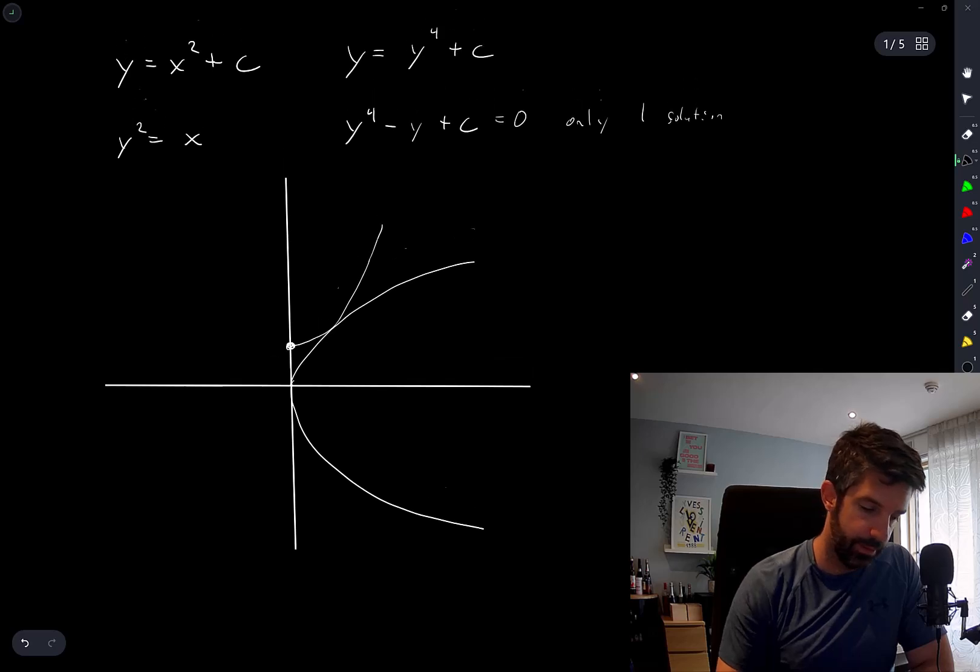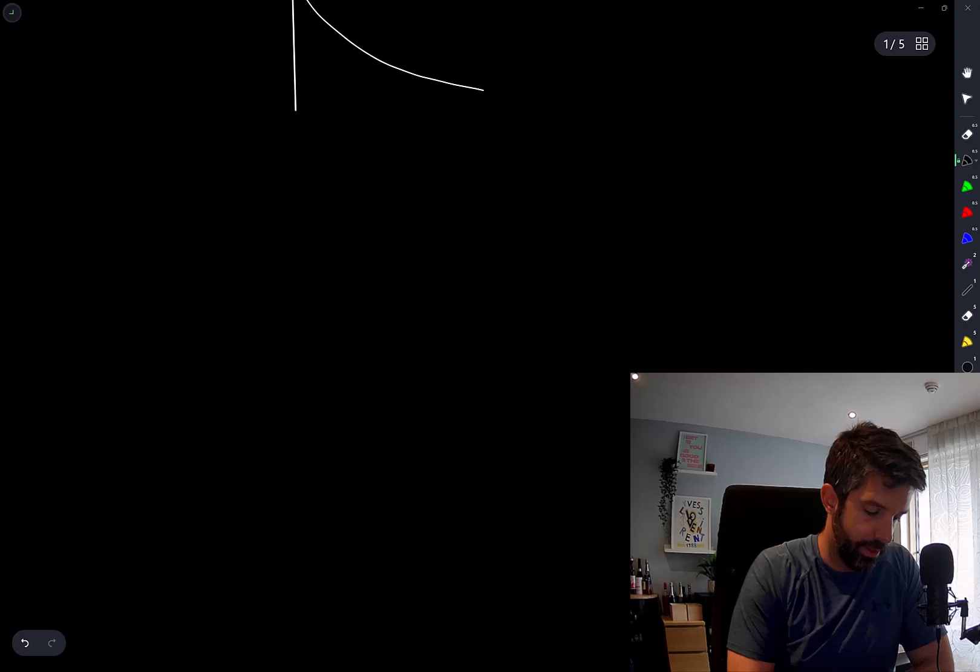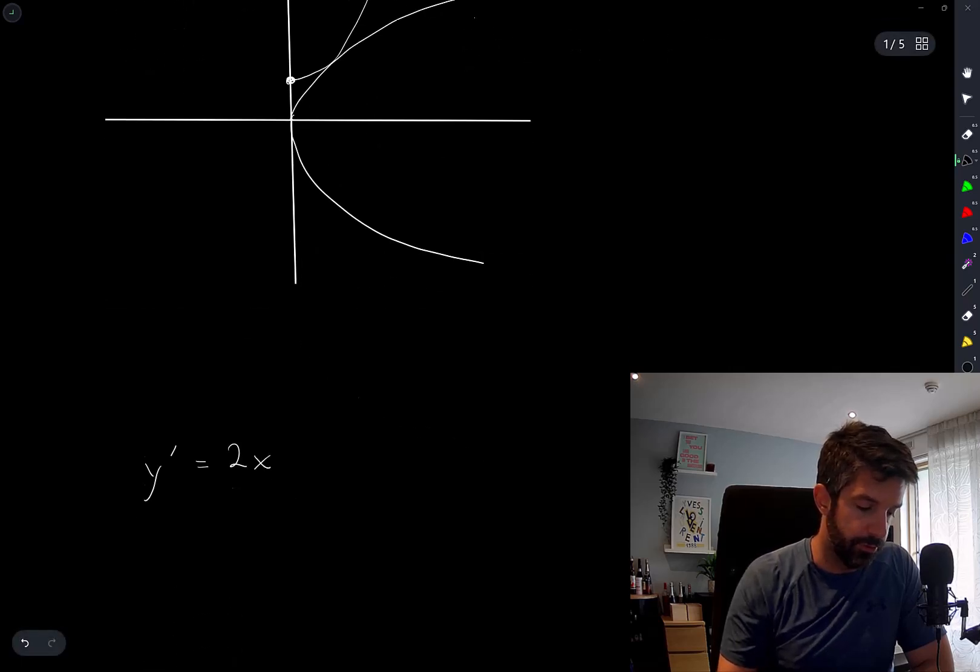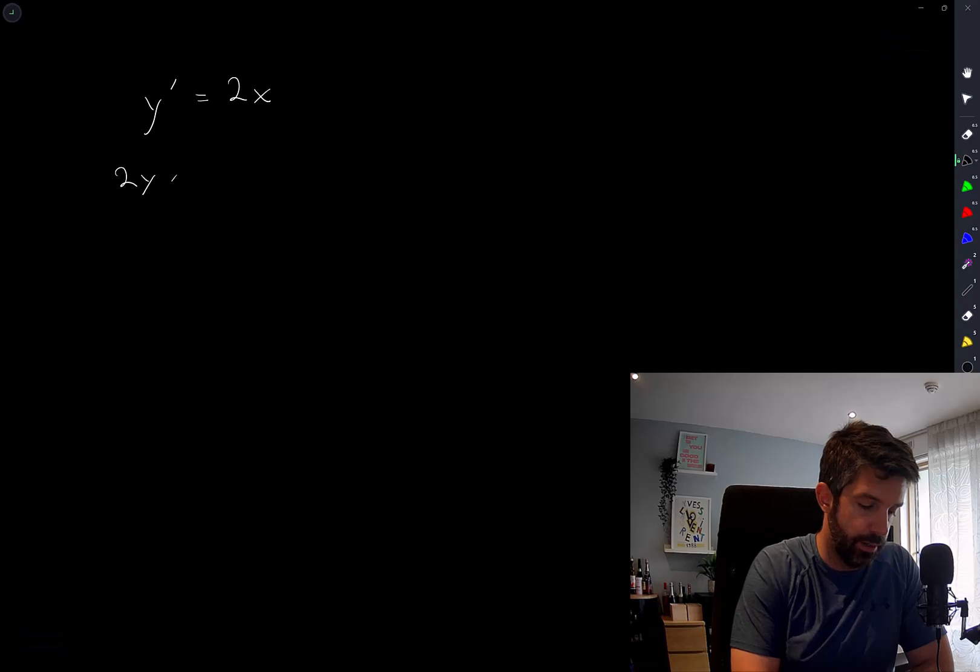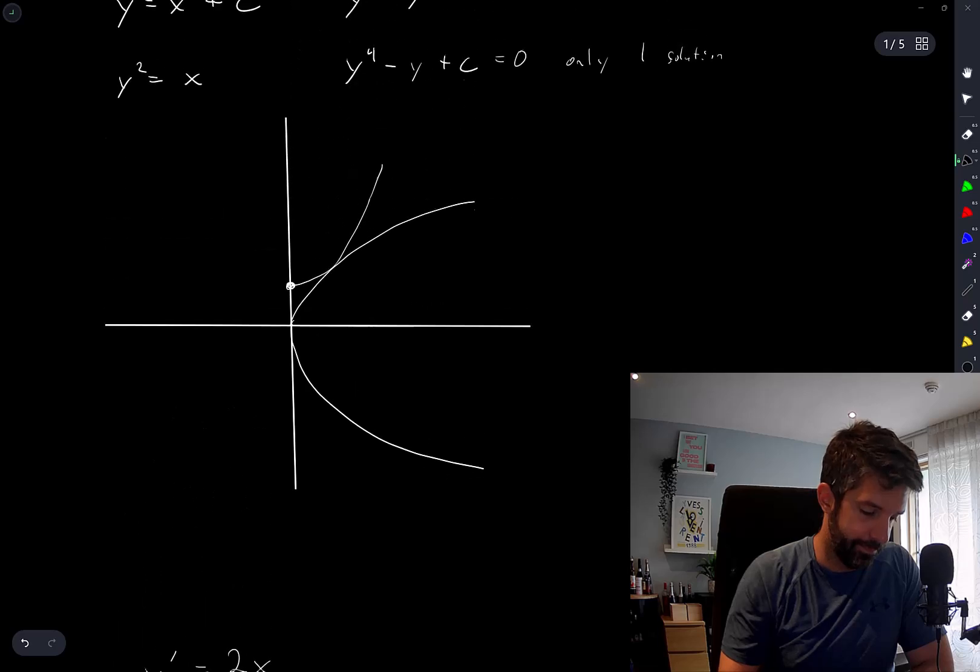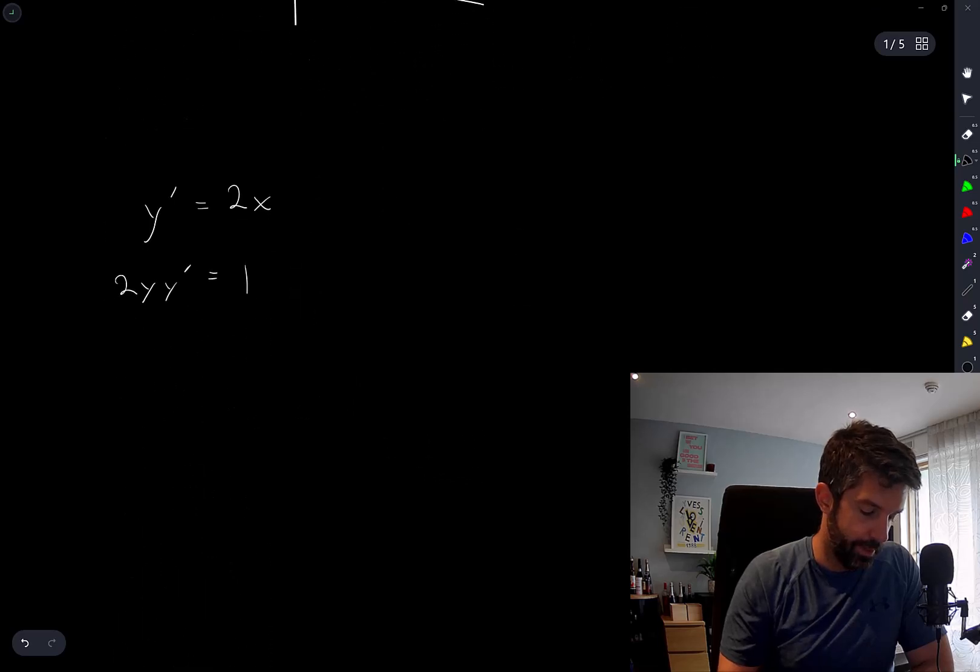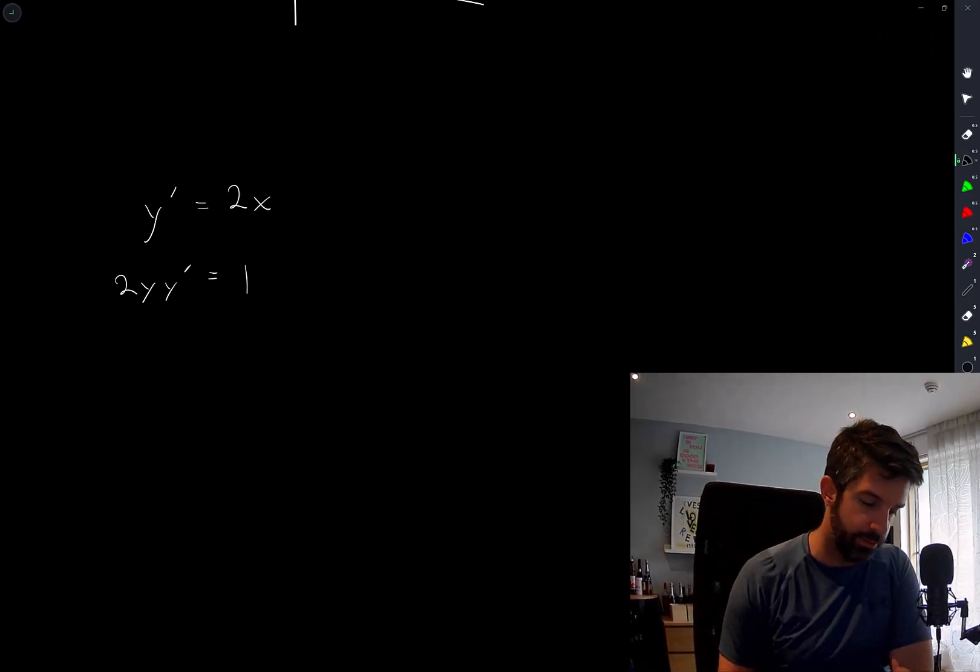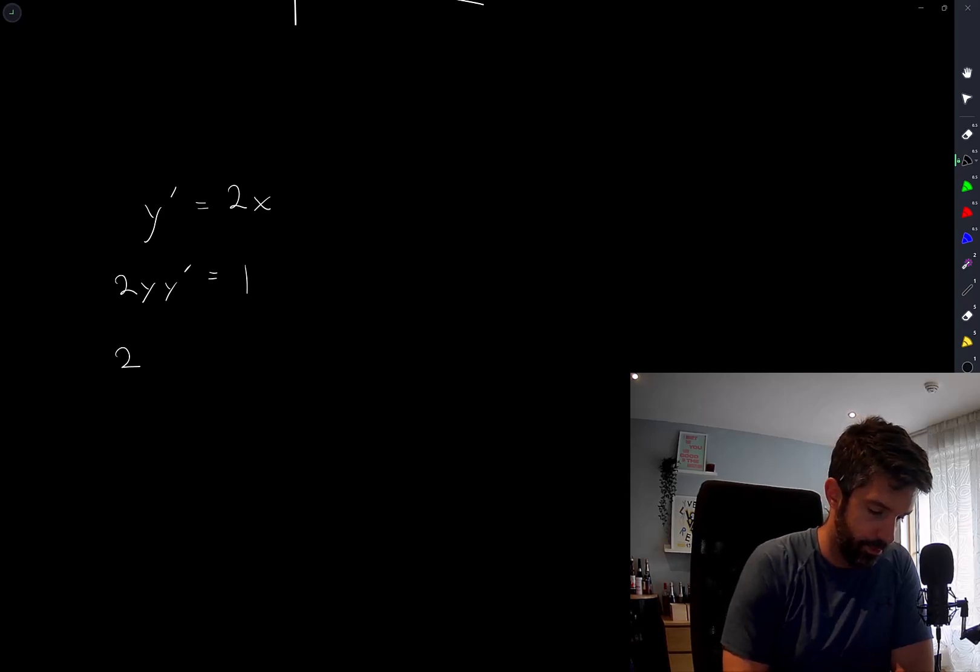If I take a derivative of the first expression, I get y prime is equal to 2x. And if I take a derivative of the second expression and use implicit differentiation, I have 2y times y prime is equal to 1. Maybe there's something I can do with this. 2y times 2x is equal to 1. So I have xy is equal to 1 over 4.